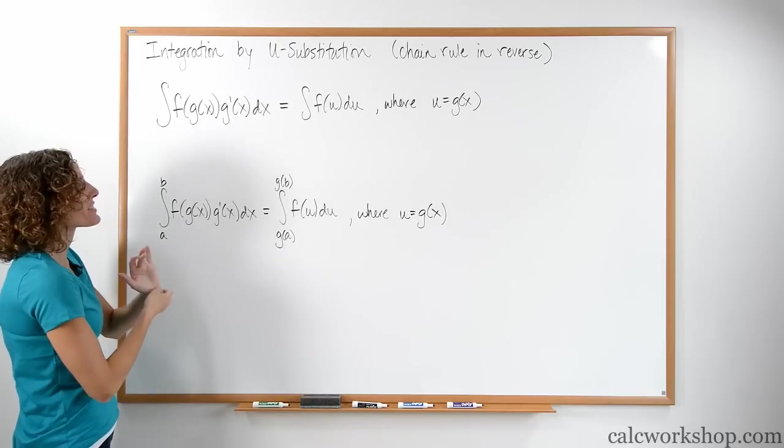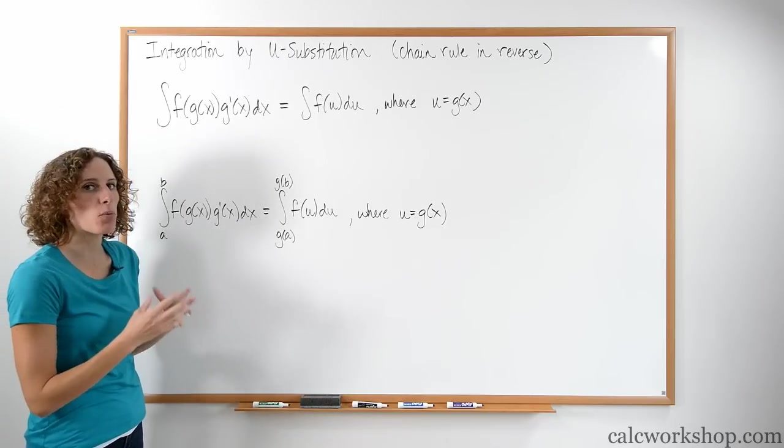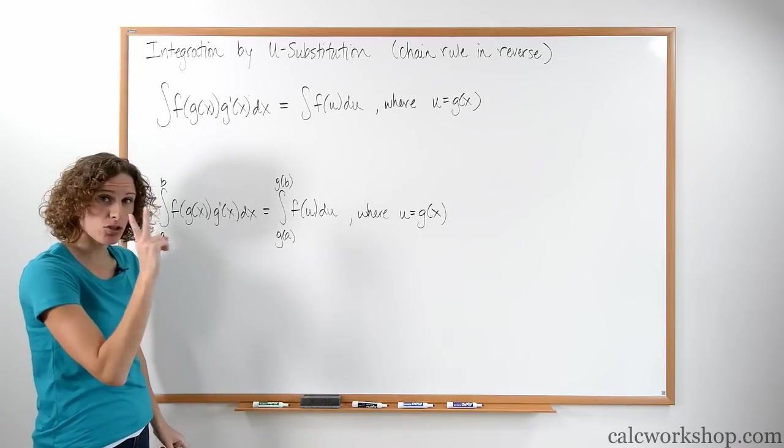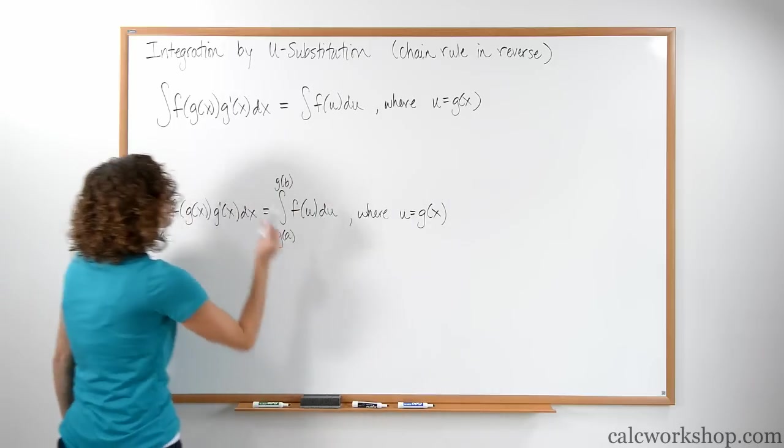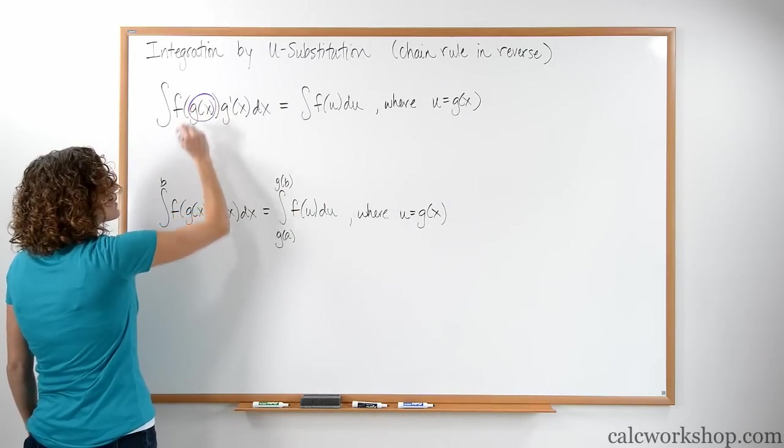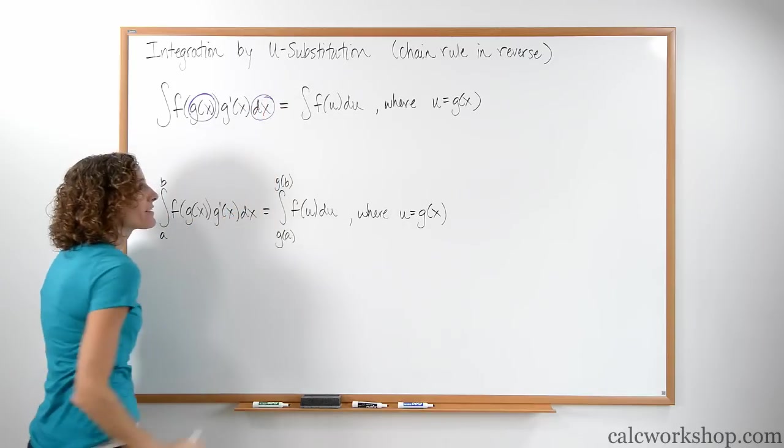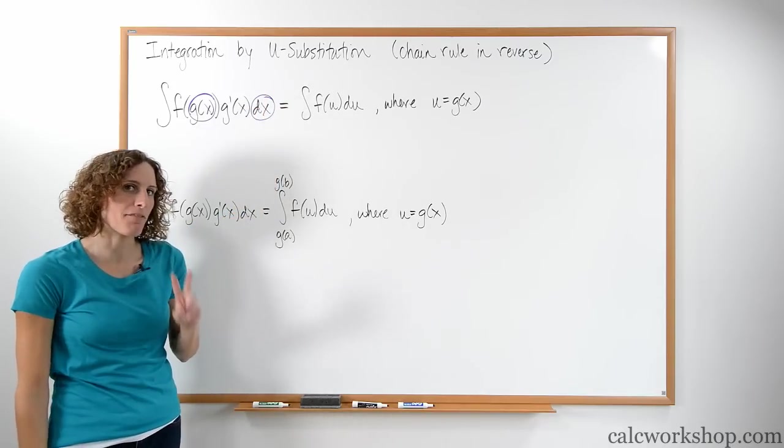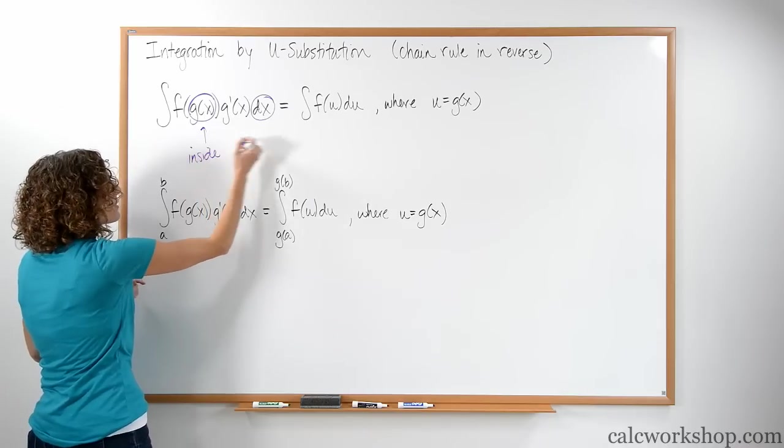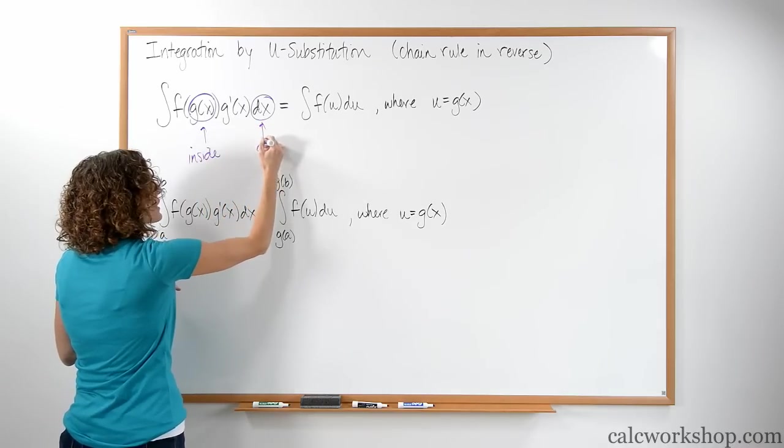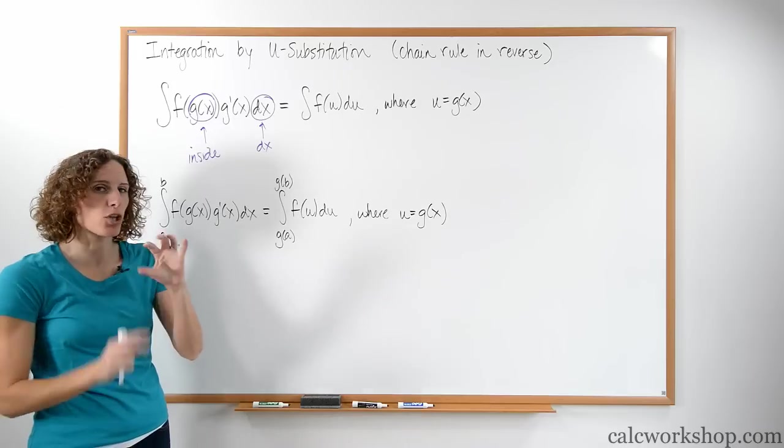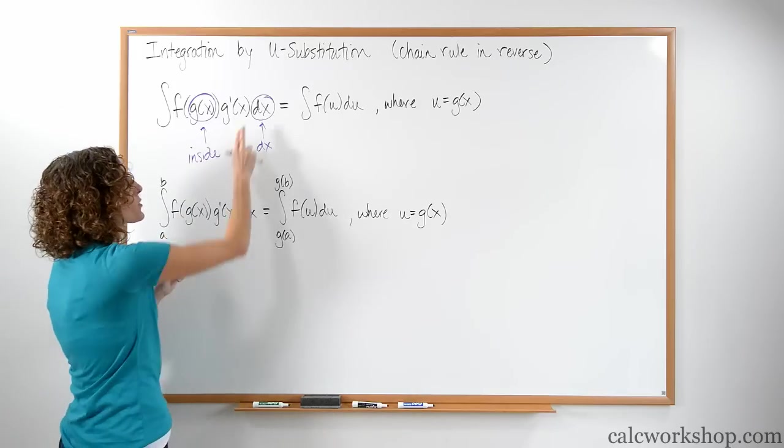What we're going to do is we're going to say, there is something about this problem that we need to change. And what you're going to be looking for is you've got to replace two things. The two things we need to replace are the inside piece and the dx. These are the two things that have to be replaced. There is the inside and the dx, the value of integration. There are always two things that need to be replaced. You're looking for the inside piece and you're looking for the dx.